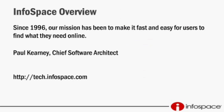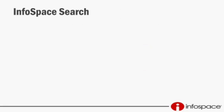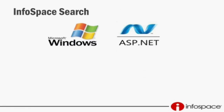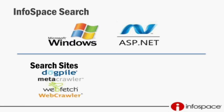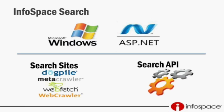Our search product is entirely based on Windows — it's an ASP.NET application. We have two primary search products. The first are the search sites we own and operate: dogpile.com, Metacrawler, Webfetch, and Webcrawler — end-user-facing sites where people can search the Internet. The other product is a search API that we white-label and expose to our distribution partners. Our distribution partners have sites they own and operate, and if they want to include search results and monetize those results, we provide an API for them to do that through.